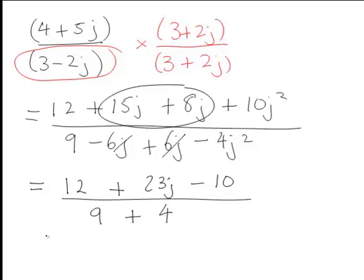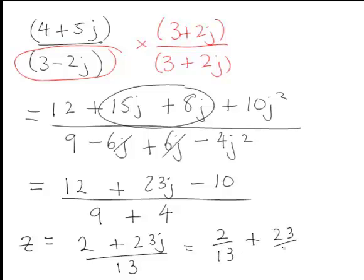And so this will then simplify down to give us that the number we started with z is 2 plus 23j divided by 13, or equivalently that could be written in the form 2 thirteenths plus 23 thirteenths times j. So that is an example of how we can simplify complex numbers.